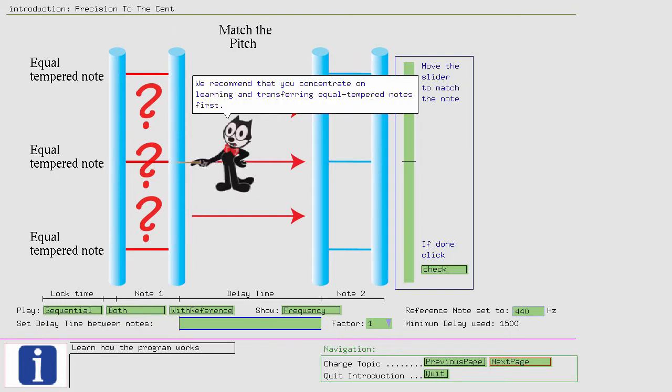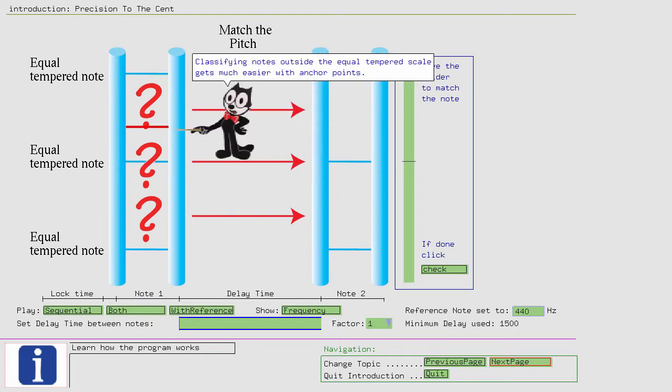We recommend that you concentrate on learning and transferring equal-tempered notes first. So postpone the match-the-pitch exercises for a later date. Practicing with equal-tempered anchor points will ease the process of pitch identification. Classifying notes outside the equal-tempered scale gets much easier with anchor points.